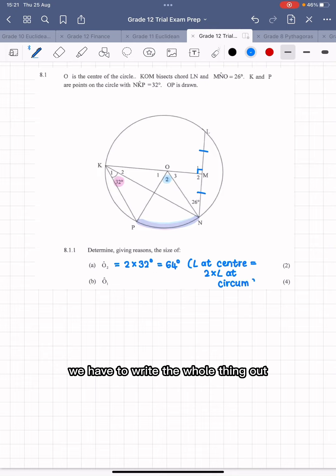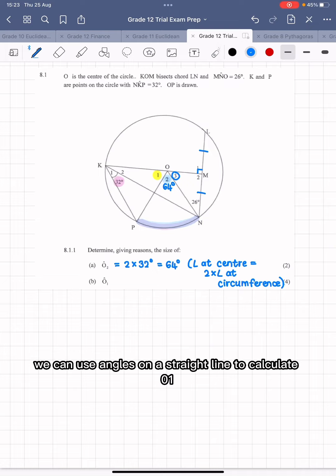Next up, they're asking us to calculate angle O1, which is this angle over here. Now my initial thought is that if we can find O3, which is over here, we can use angles on a straight line to calculate O1.